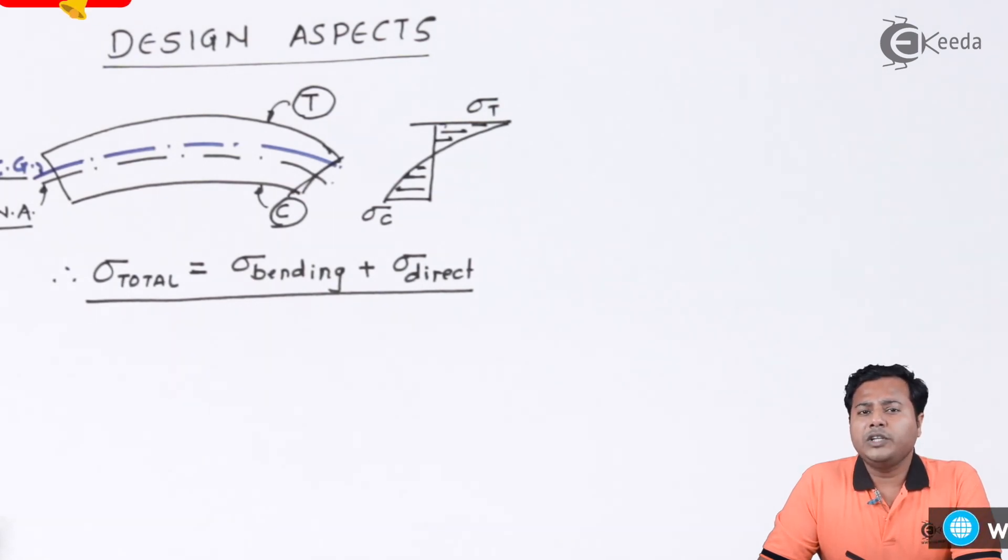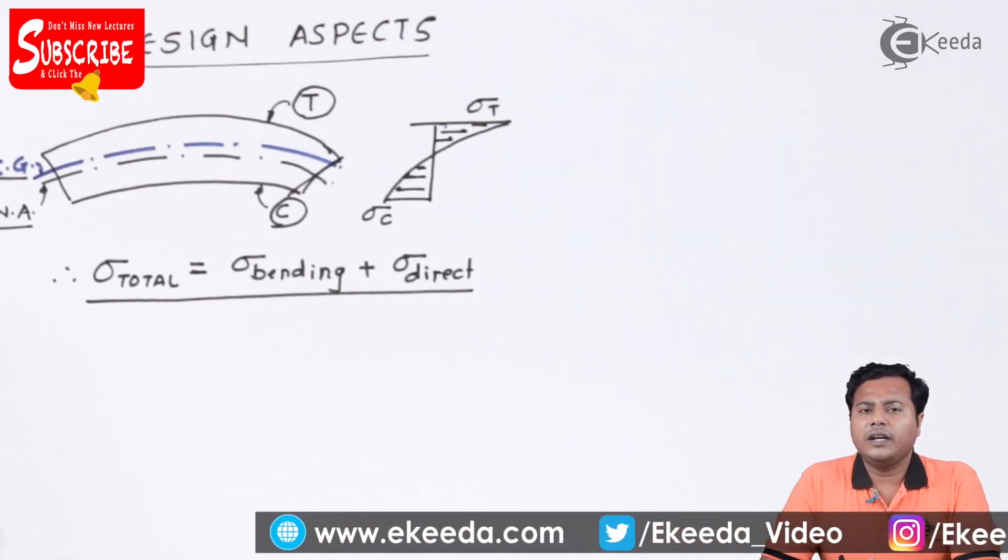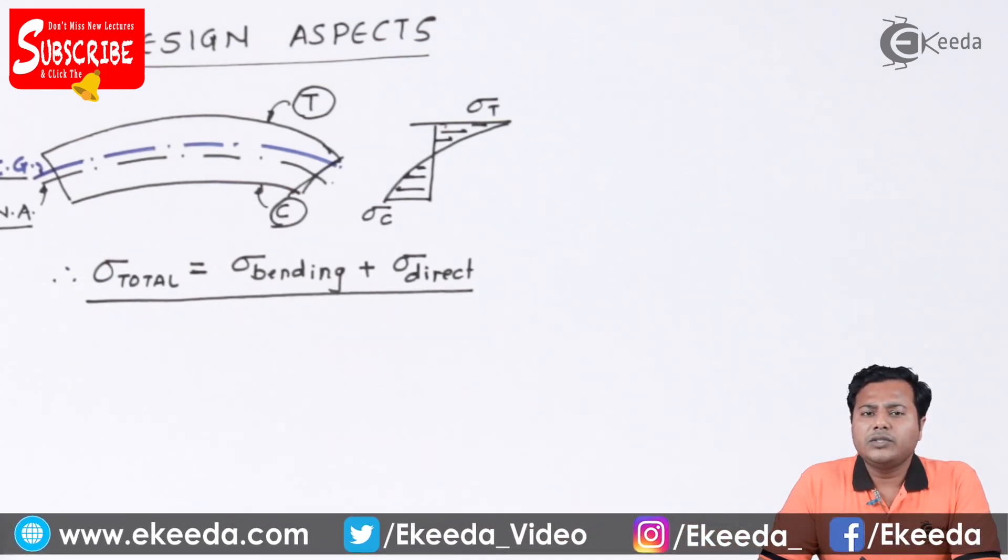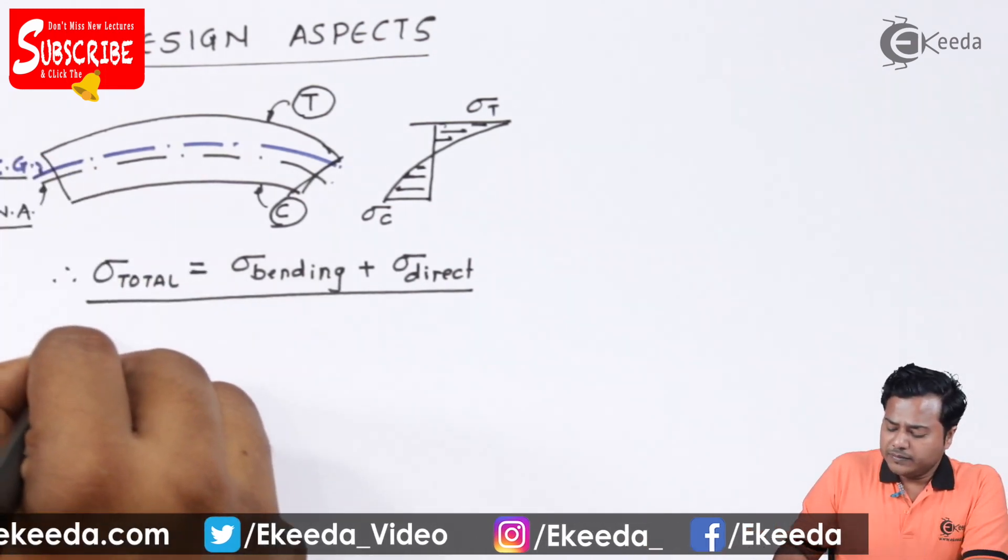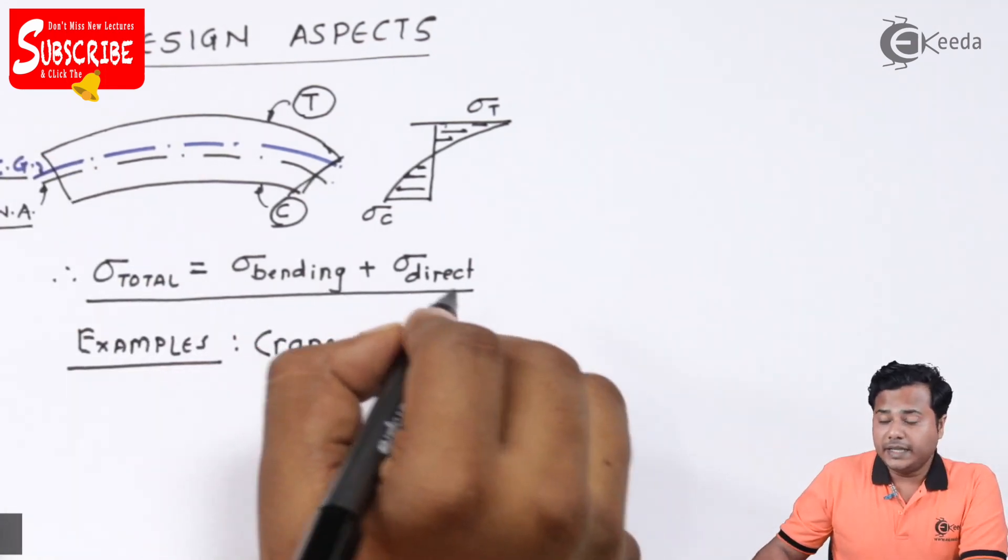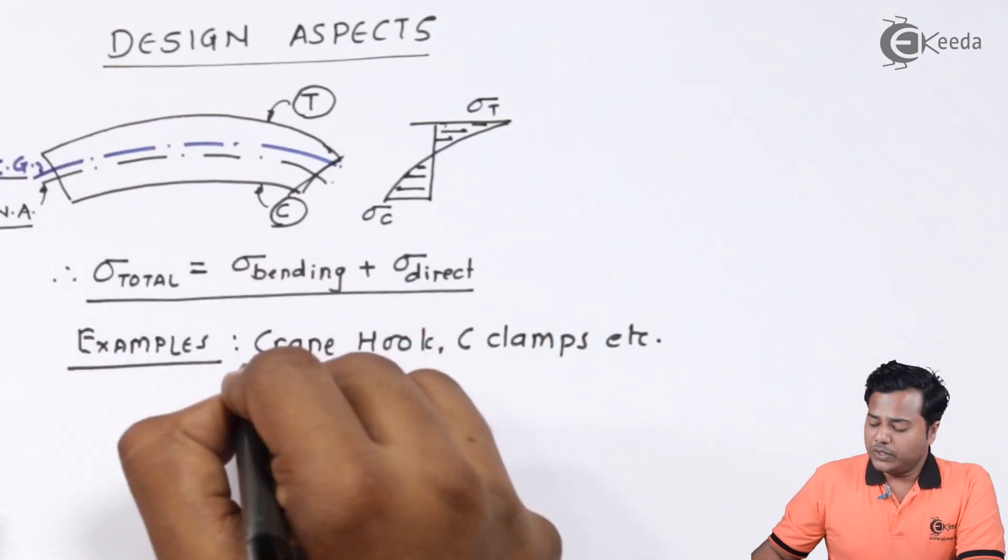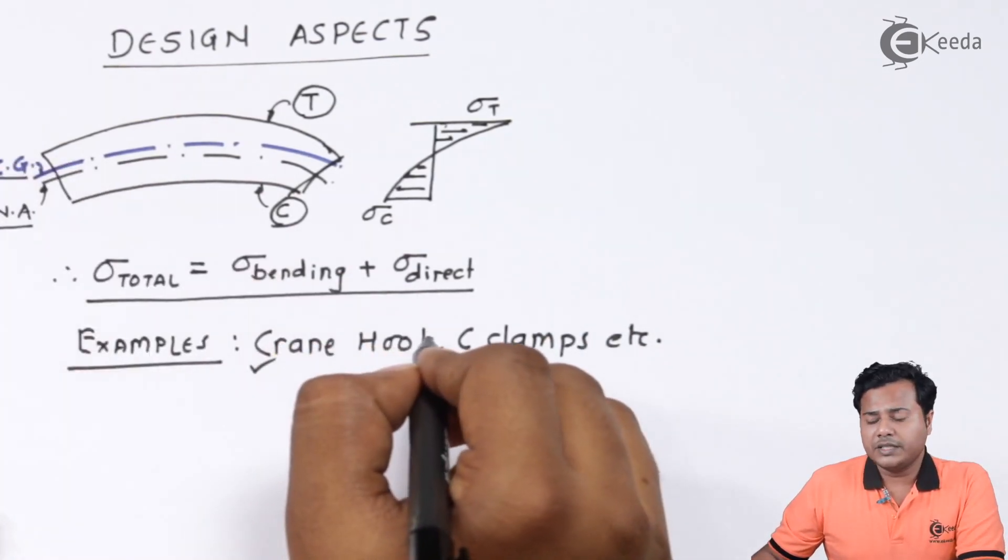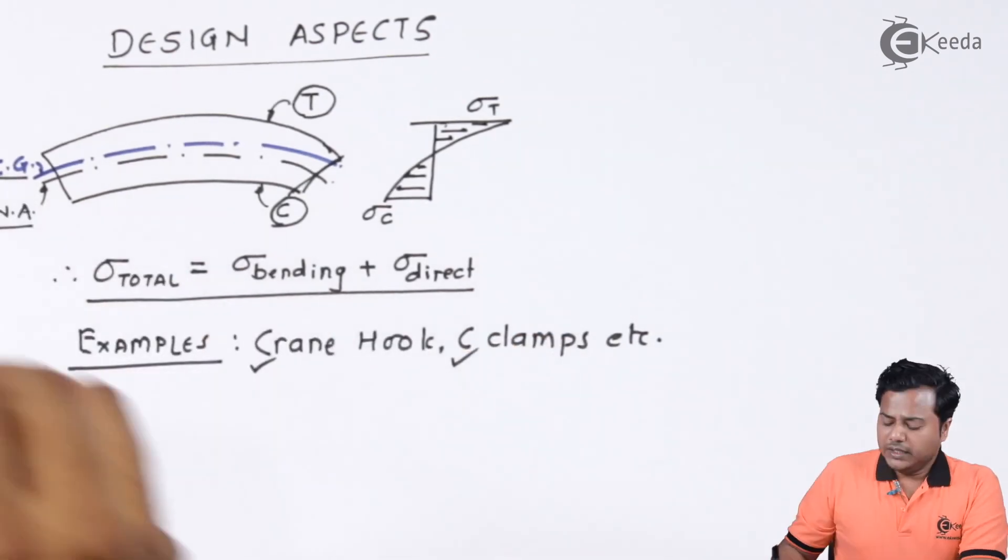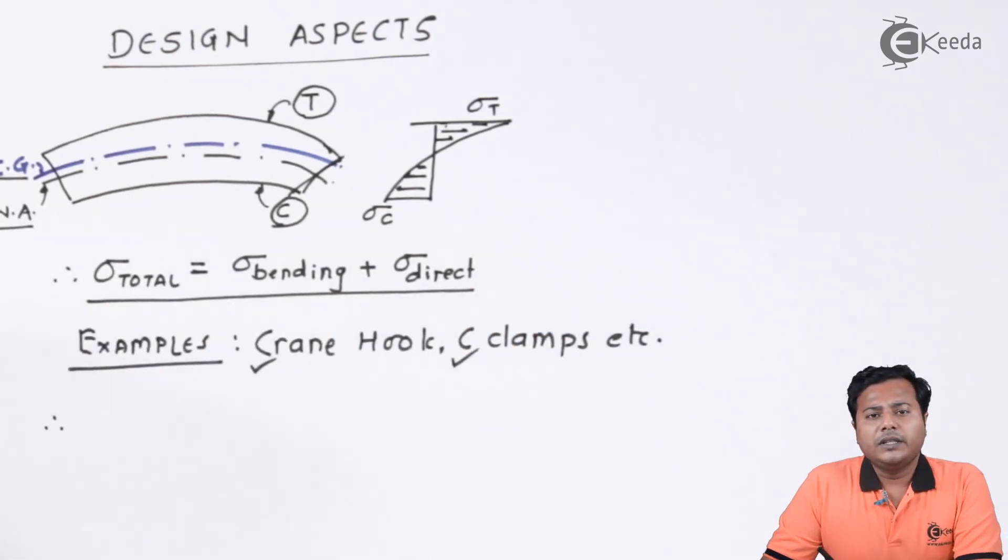The same example we can use for C-clamp. Yes, C-clamps are used to clamp different devices. They are called kind of fixtures. So in those fixtures or in C-clamps also, the stresses that induce are of this particular nature, the nature of curved beam. So the examples are crane hook, C-clamps, etc. So no doubt that we are going to work on the numerical on crane hook design and numerical on C-clamp design.